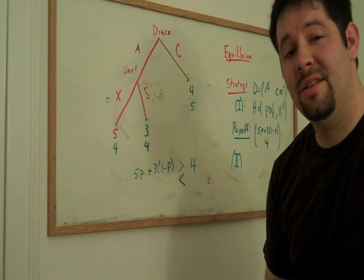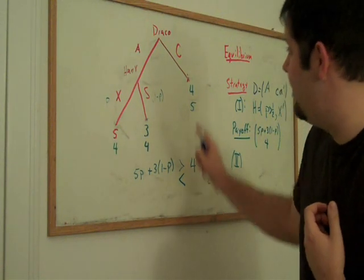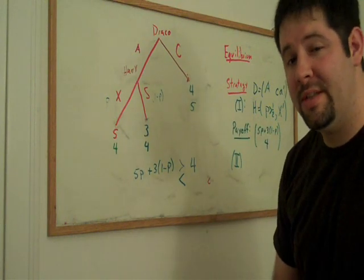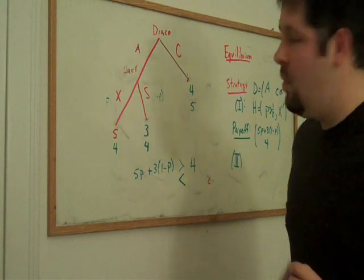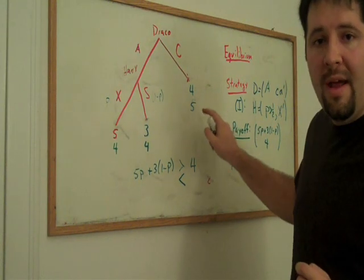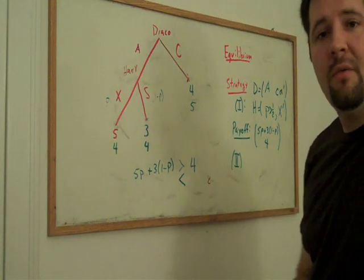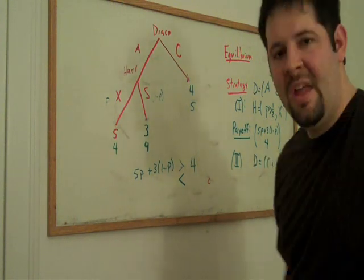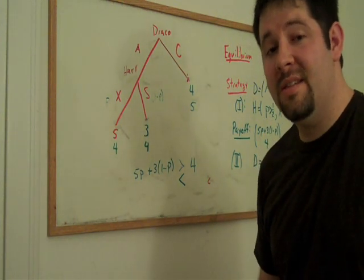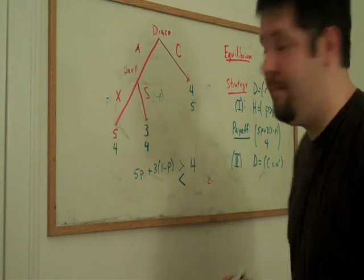Now let's consider case 2 where P is less than 1 half. And that implies that Draco's optimal choice is to choose C. When Draco chooses C, we get the payoff of 4 and 5. We have strategies of Draco choosing C, little c and A prime. And Harry chooses P less than 1 half and X prime. And the payoff in equilibrium is just 4-5.